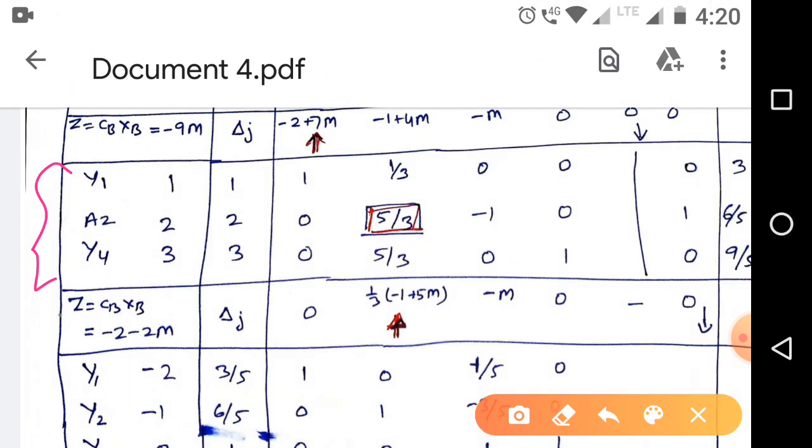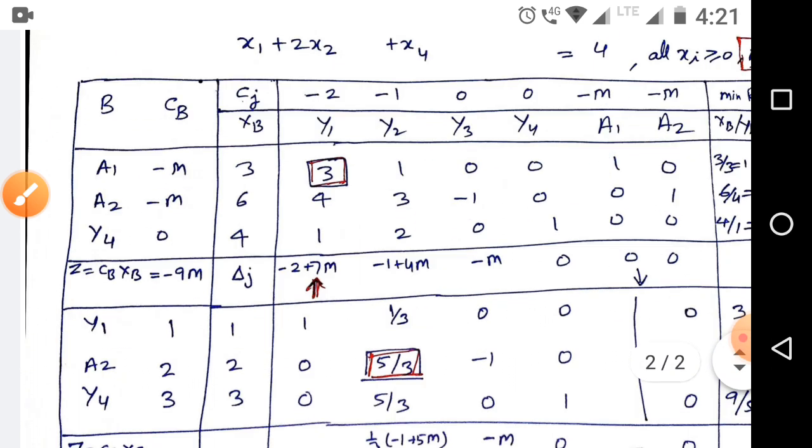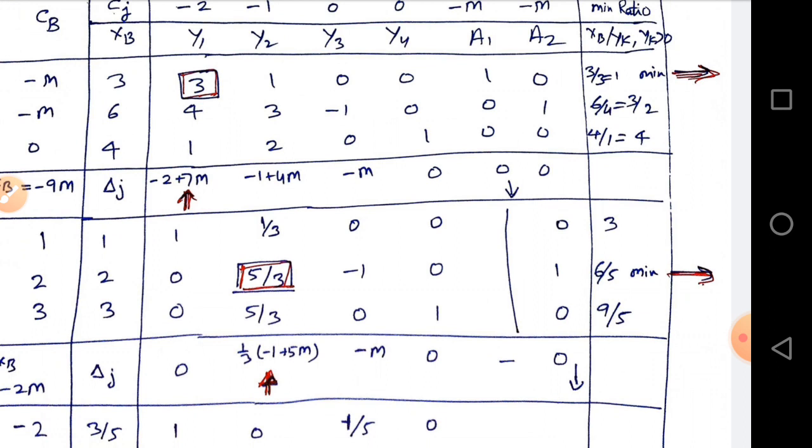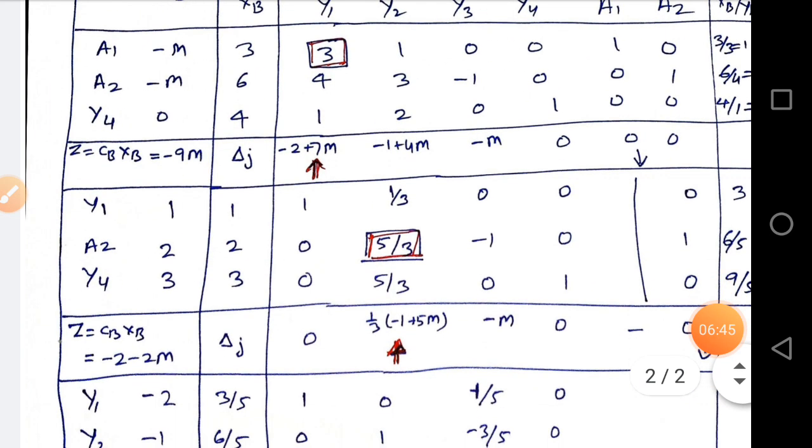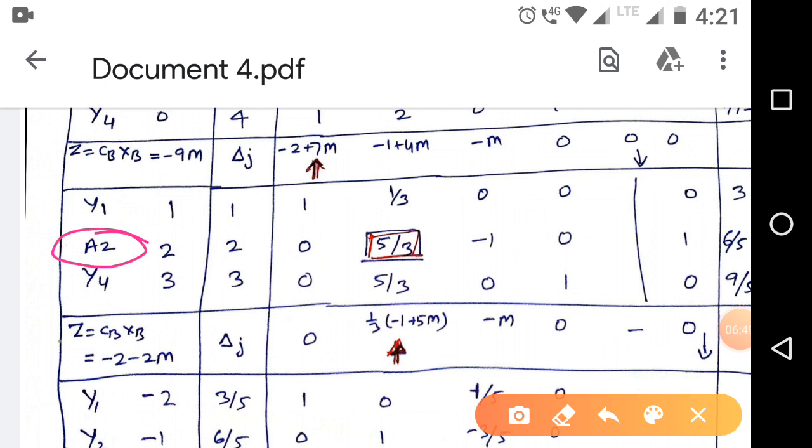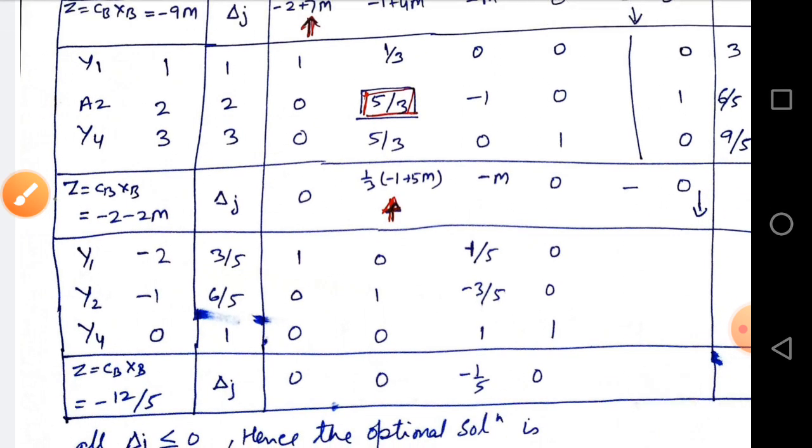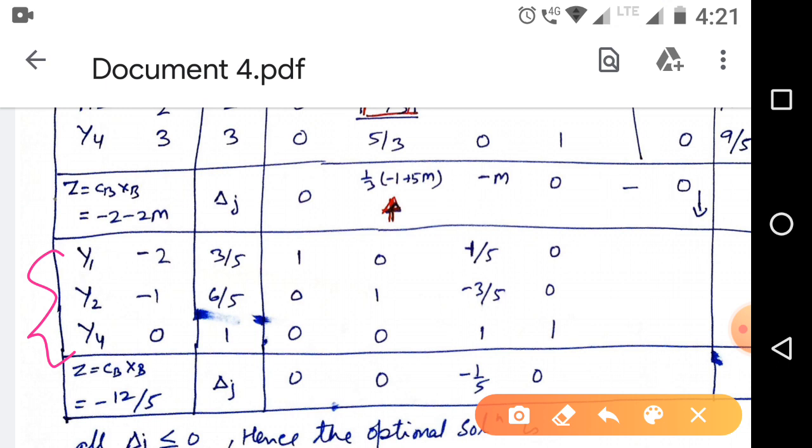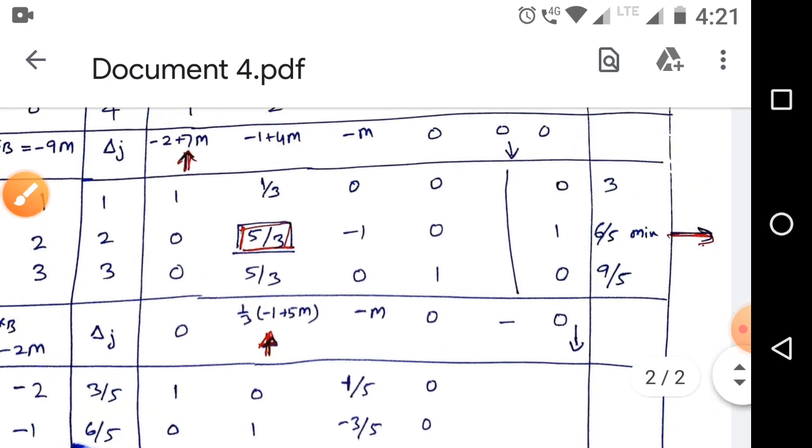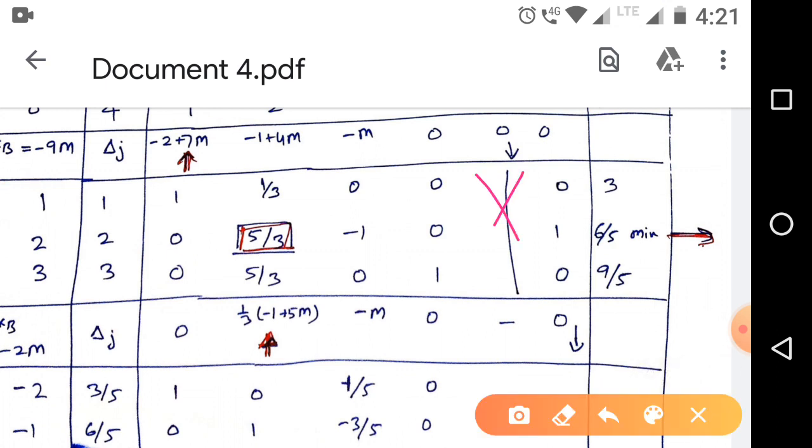Now calculate again delta j and choose maximum delta j. This means y2 enters in the basic. Calculate minimum ratio. Minimum ratio is this, this means the artificial vector A2, the artificial variable A2, removes from the basic. So we get this table: y1, y2, y4 in the basic, no artificial variable here.